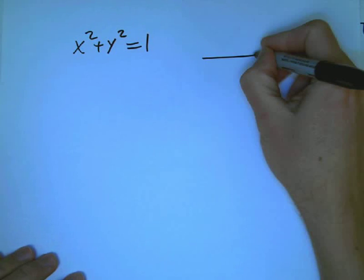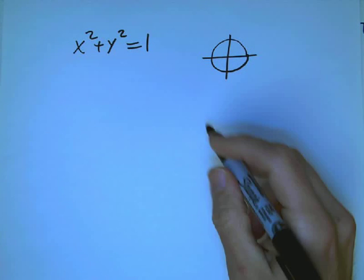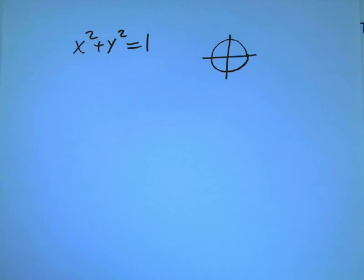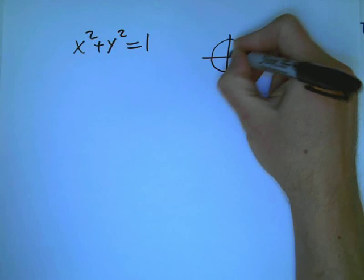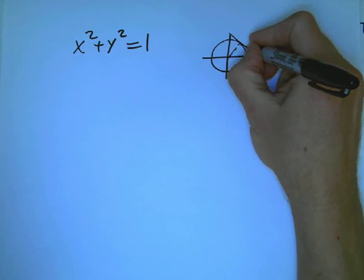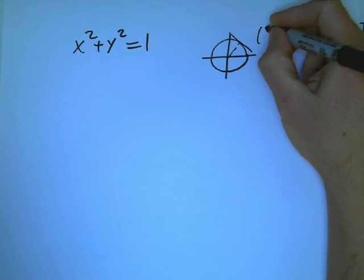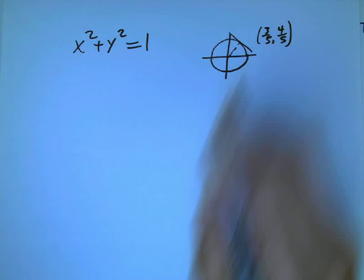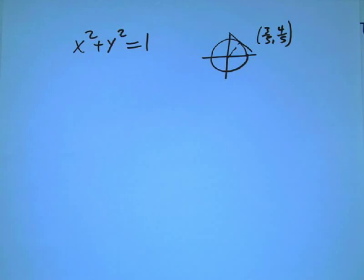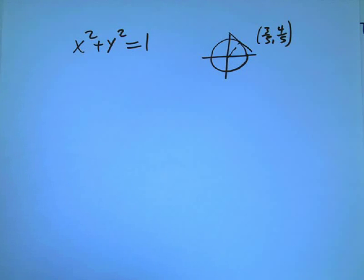What I want to do is review real quickly how we used an equation like that and differentiated both sides with respect to x to answer a question like this: What is the slope of the tangent line to that circle at, let's say, three-fifths, four-fifths? You can easily verify that's on the circle because 3, 4, 5 is a Pythagorean triangle.